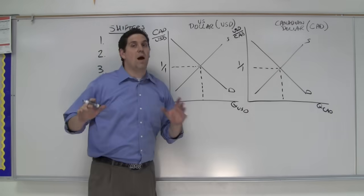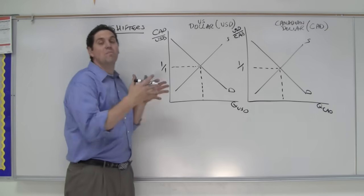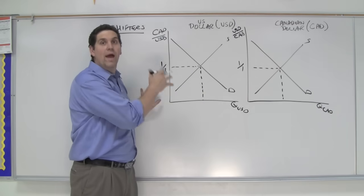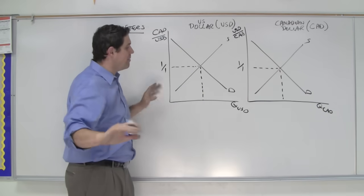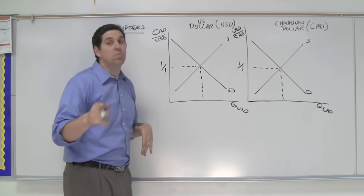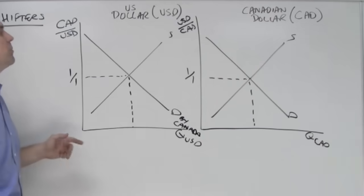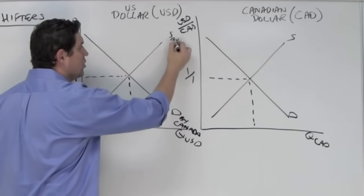Now before we go any further, we have to figure out who is demanding and who is supplying. When we're analyzing dollars, who is the one that's demanding the United States dollars? Don't say Americans. Americans don't demand our dollars. We're supplying them. The demand is determined by Canadians. Who's supplying? Well, the supply is by the US. You got to keep that straight because that's going to help you out later on.